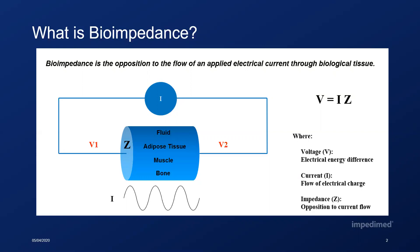As the current flows it loses energy, and the resulting energy loss across the body caused by the material or tissue is measured by the difference in voltage between a second set of sensing electrodes — so V1 minus V2. Ohm's law relates the voltage to the current and impedance, and therefore measurement of the voltage difference and current flow can be used to determine the resulting bioimpedance.